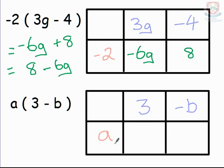A times 3, that's 3a. A times negative b, it's going to be negative ab or negative ba. Meaning that my final answer here, if I put those together, it's 3a subtract ab.